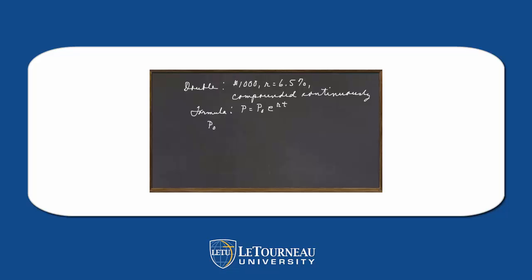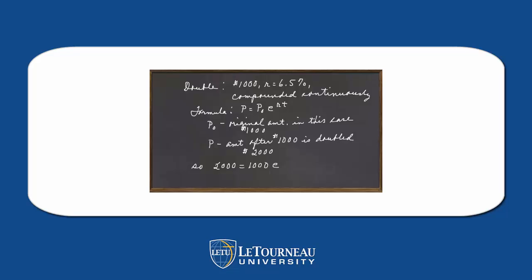Now here's our formula. P sub 0 is our original amount — that's how much we invested, in this case $1,000. P is the amount after $1,000 is doubled, in other words when we get $2,000. So we're going to solve 2,000 equals 1,000 times e to the 0.065t.